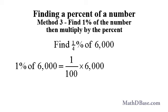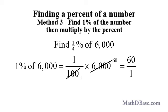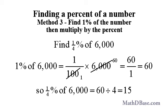1% of 6,000 is 1 over 100 times 6,000. 100 is the highest common factor of 100 and 6,000. So we can reduce that product to 60 over 1, or 60. So 1 quarter percent of 6,000 is equal to 60 divided by 4, or 15.